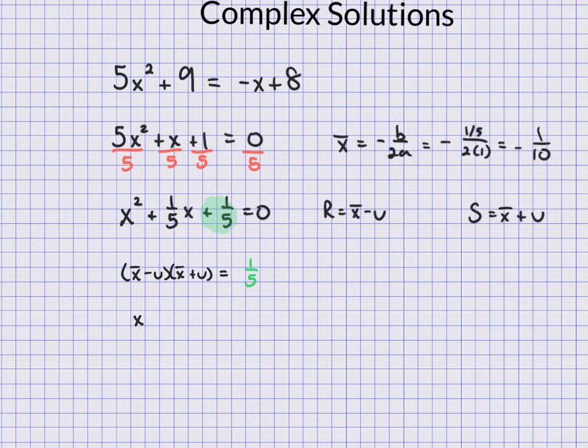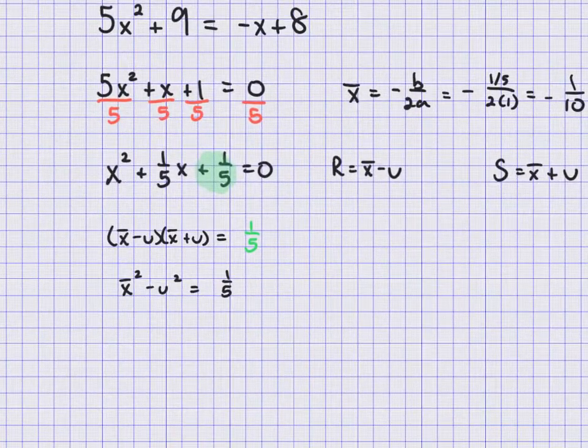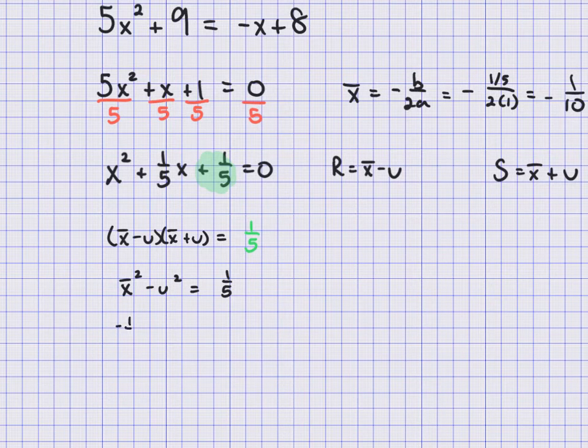Well, remember that conjugates here multiply to be the difference of squares. X-bar squared minus u squared is equal to one-fifth. And from here I can substitute in the negative one-tenth in for x-bar.